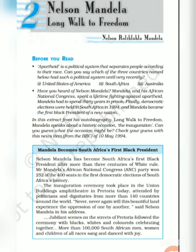The second practice is untouchability. History is a witness where the Harijans and people belonging to the lower caste were considered untouchables. They were not given equal opportunities, they were asked to live at the outskirts of the town, and they were not allowed to draw water from the well.